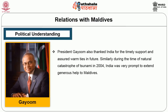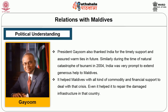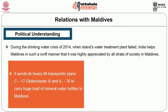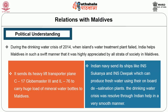India's action was appreciated by powers like the USA, USSR and UK and praised by neighbours like Nepal and Bangladesh. President Gayoom thanked India for its timely support. Similarly, during the tsunami of 2004, India was very prompt in extending help to Maldives with commodity and financial support and helped repair damaged infrastructure. During the drinking water crisis of 2014, when Maldives' water treatment plant failed, India sent its heavy-lift transporter planes C-17 Globemaster-3 and IL-76 carrying mineral water, and Indian Navy ships INS Sukanya and INS Deepak used their onboard desalination plants to resolve the crisis.